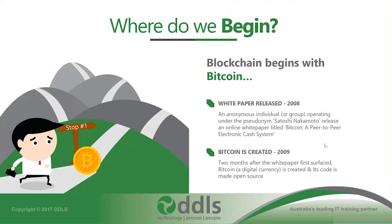About two months after this white paper emerged, Bitcoin was actually created and its source code was made completely available to the public. Bitcoin, the protocol, isn't controlled or governed by any single authority. Instead, it's governed by an algorithm and owned by the network. We'll get into that a little bit more later.